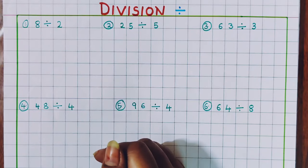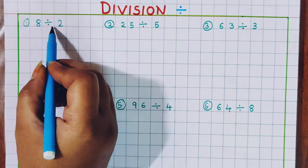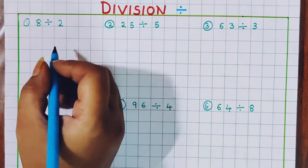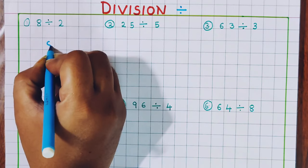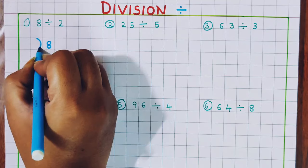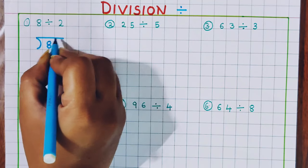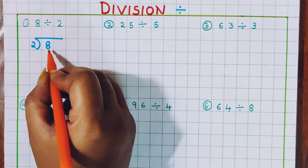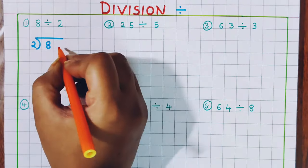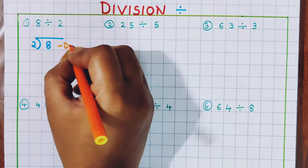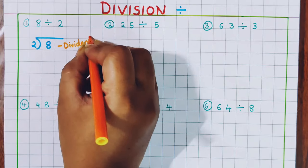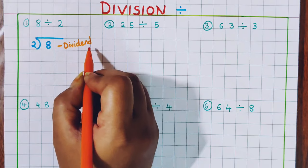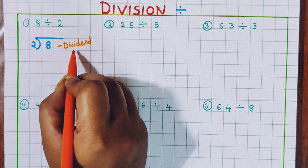Now let's understand it with one example. 8 divided by 2. So how are we going to write this? Here we write 8, divided by 2. Now here 8 is the dividend — that means the number which we are going to divide is known as the dividend. Here 8 is the dividend.